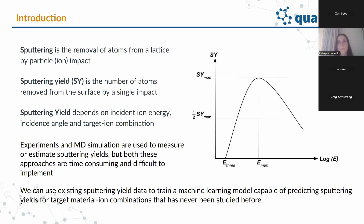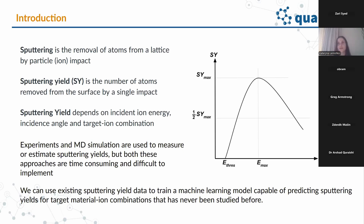Sputtering yields are usually determined through experiments or molecular dynamics simulations, but both approaches are time-consuming and can be difficult to implement. Instead, we can use existing sputtering yield data to train a machine learning model that can predict sputtering yields for target material-ion combinations that have never been studied before.